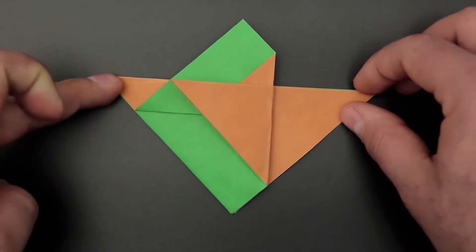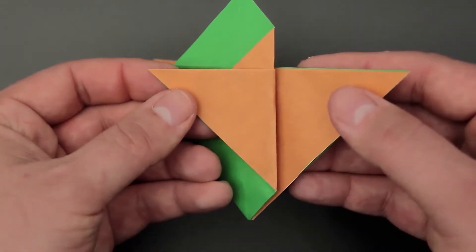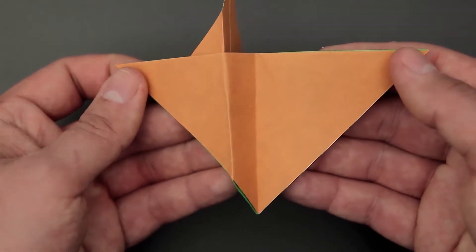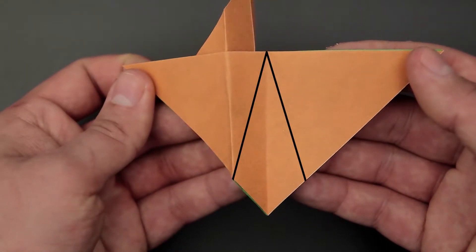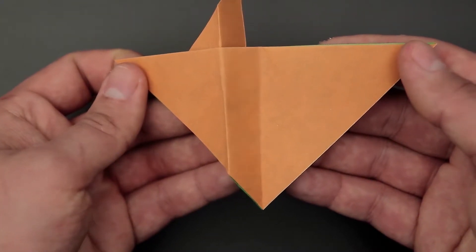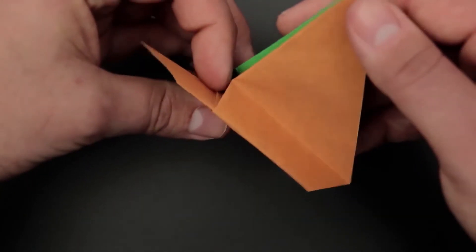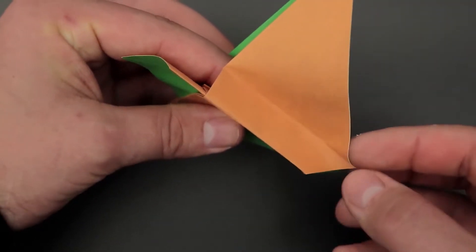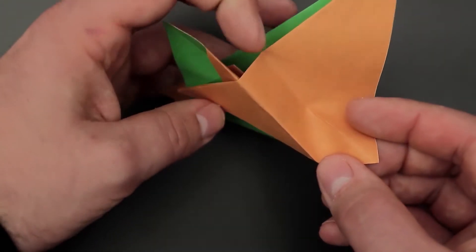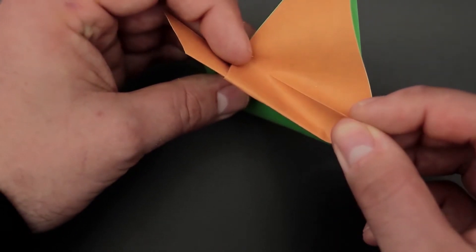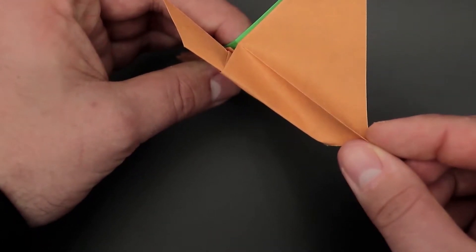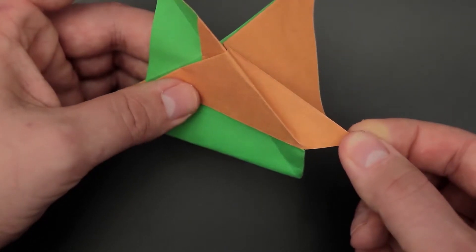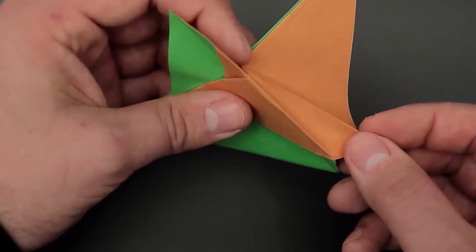Once done, we have to open the right side, and in this space we'll have to fold two new diagonal creases. To do this, just hold the last fold, bring the middle crease up, then close the paper again, bringing the corner out.